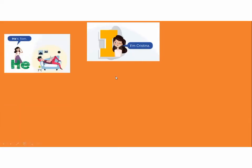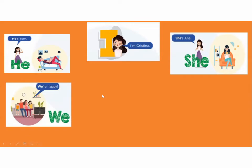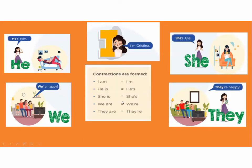Tenemos acá los pronombres personales. El pronombre personal I significa yo — I'm Cristina. He significa él — he's Tom. She significa ella — she's Anna. We significa nosotros — we're happy. They significa ellos — they're happy. Y luego tenemos las contracciones: I am o I'm, he is o he's, she is o she's, we are o we're, they are o they're. Son las contracciones del verbo to be.